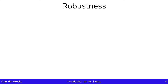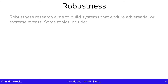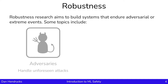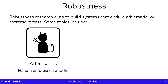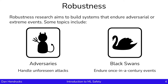Let's zoom into robustness. Robustness can be described as research that aims to build systems that can endure adversarial events or extreme events. It breaks down into two different topics. There's adversarial robustness — the goal being how can we build models that handle attacks that are unforeseen? Another topic is black swan robustness, and an aim of that is how can we build models that are able to endure once-in-a-century events?